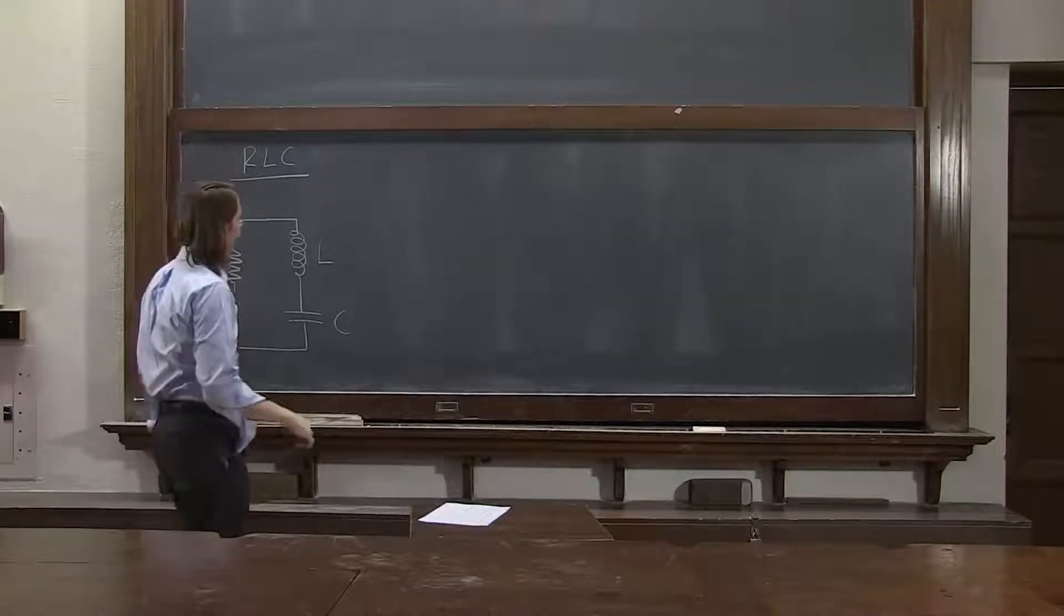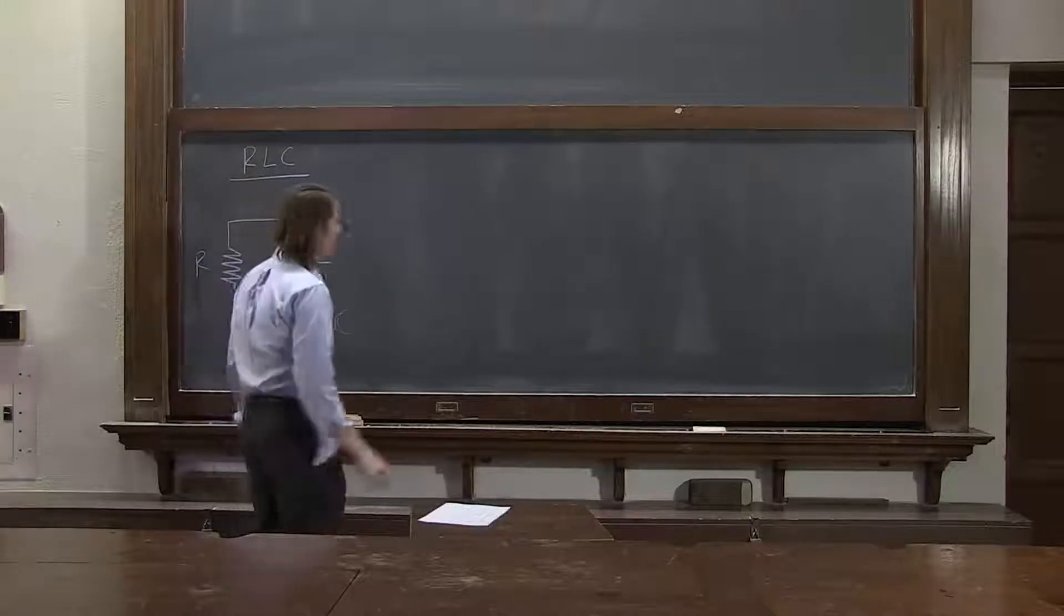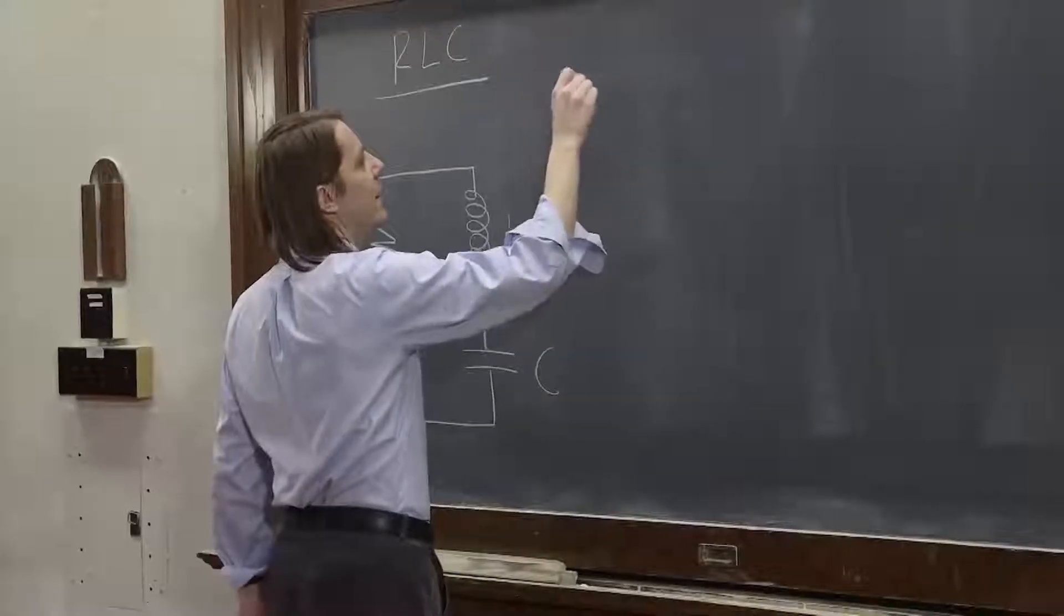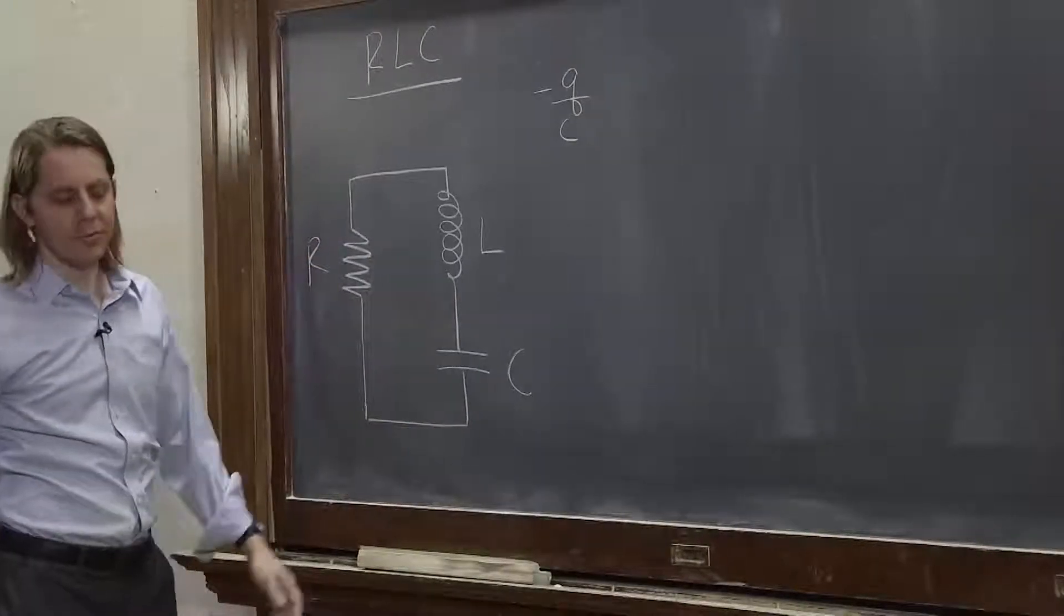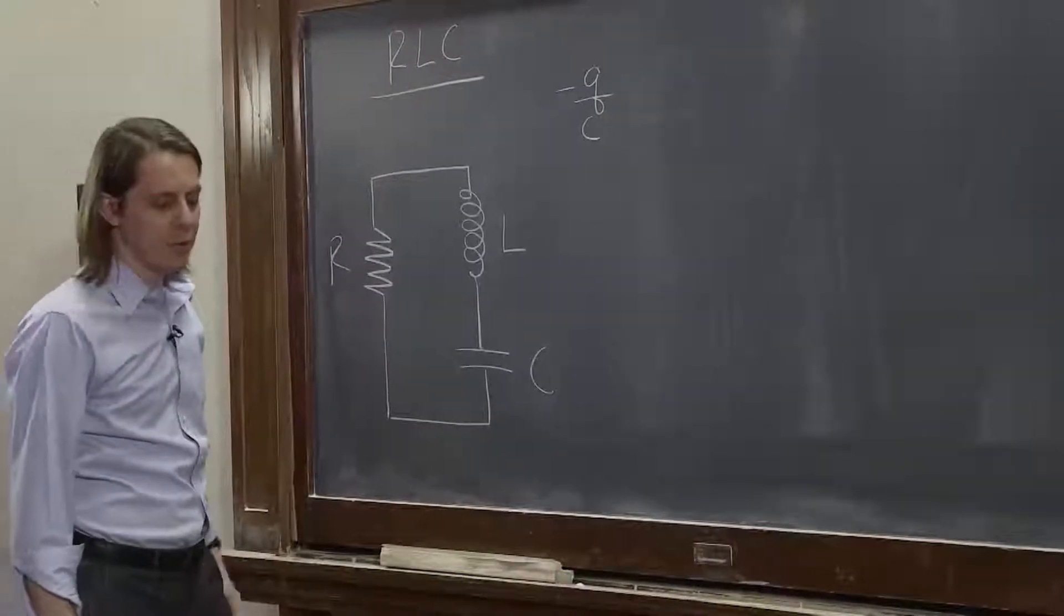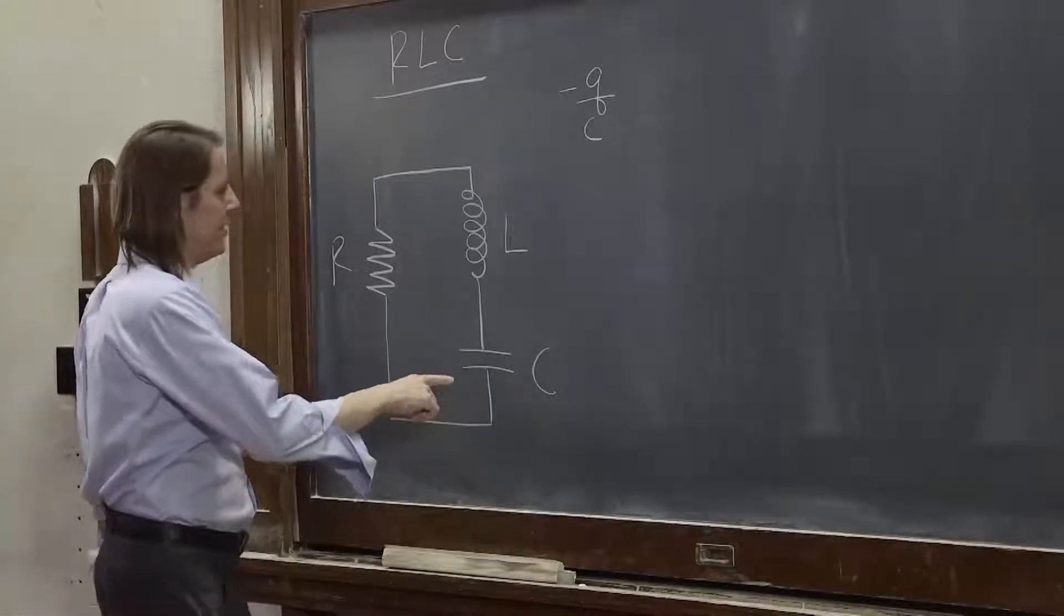So we use our little fiction here and think about the potential drop around each one and add them up and get zero. Around the capacitor we have a drop of negative Q over C.